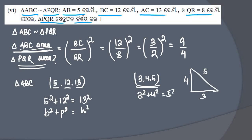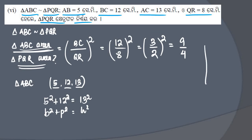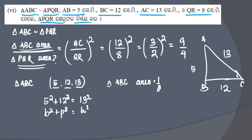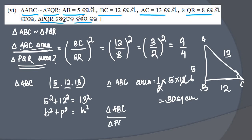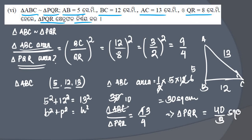So 3, 4, 5 also satisfies: 3 squared plus 4 squared equals 5 squared. Since triangle ABC with AB=5cm, BC=12cm, AC=13cm forms a right triangle, we can find its area. Area of ABC equals half into base into height equals half into 5 into 12 equals 30 square cm. So triangle ABC area divided by triangle PQR area equals 9 by 4. Since ABC area is 30, we get 30 divided by PQR area equals 9 by 4, so PQR area equals 4 times 30 divided by 9 equals 40 divided by 3 square cm.